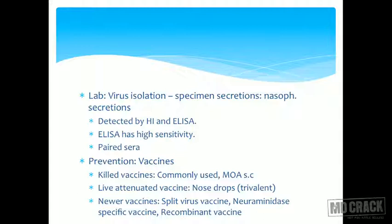For prevention, vaccines are available and making them is an ongoing task. Killed vaccines are commonly used and administered subcutaneously. A very recently developed live attenuated vaccine is available in the form of nose drops — this is new and can be tested. This is probably the first vaccine marketed in a nasal drop preparation.